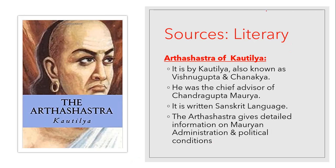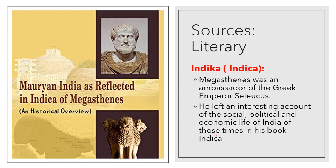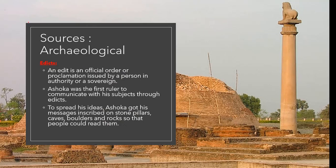To revise literary sources: Arthashastra by Kautilya, also known as Vishnagupta and Chanakya, who was chief advisor of Chandragupta Maurya, written in Sanskrit, giving detailed information on administration and political conditions of the Mauryan Empire. The second literary source is Indica, written by Megasthenes, which covers the social, political, and economic life of India during those times.